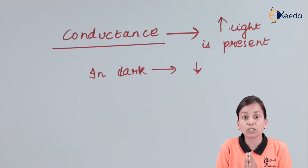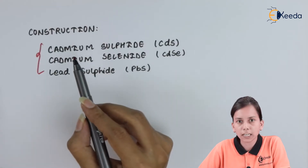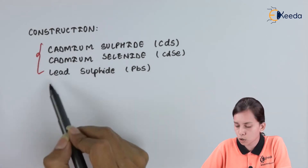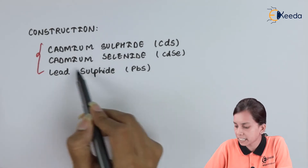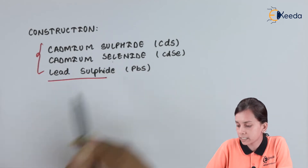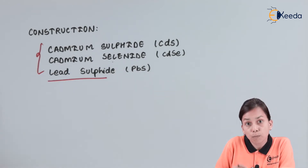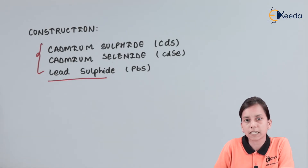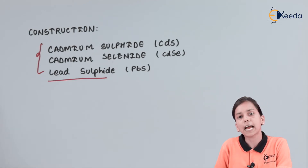Let us talk about the construction of the photoconductive cell. Photoconductive cells basically consist of materials such as cadmium sulfide, cadmium selenide, and lead sulfide. These materials are deposited on insulating substrates such that we can expose them to light, and that light will vary the resistance.